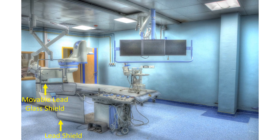Radiation protection devices are mandatory when working in the cath lab. The patient table has lead shields on the sides to minimize scatter radiation from the X-ray generator. A movable glass shield is positioned between the operator and the image intensifier.